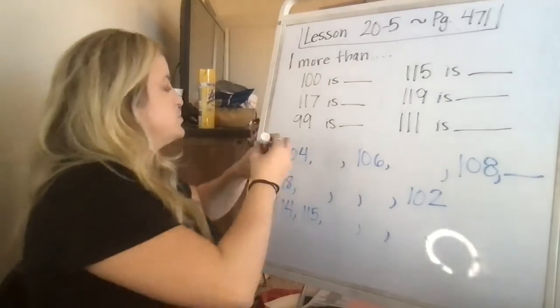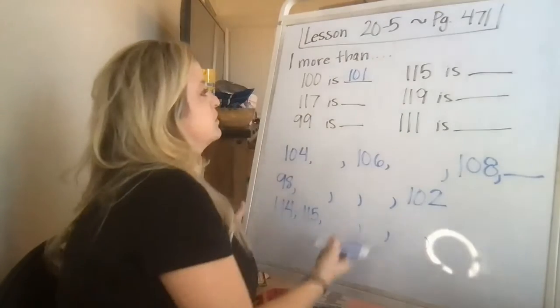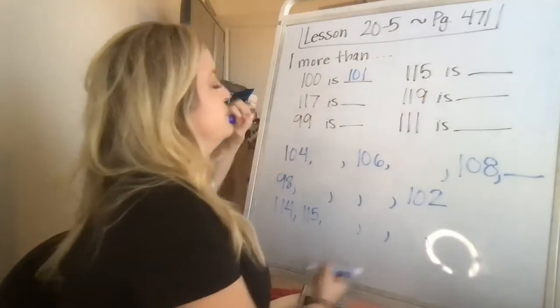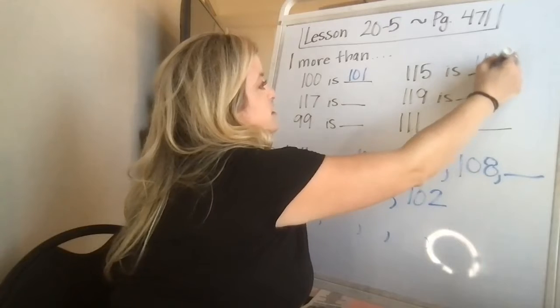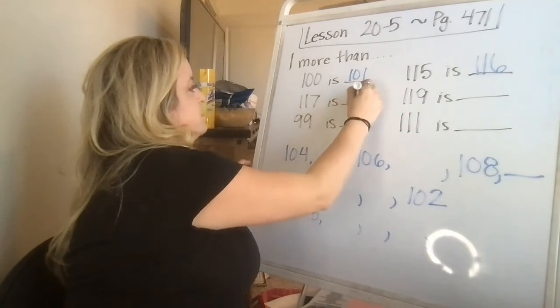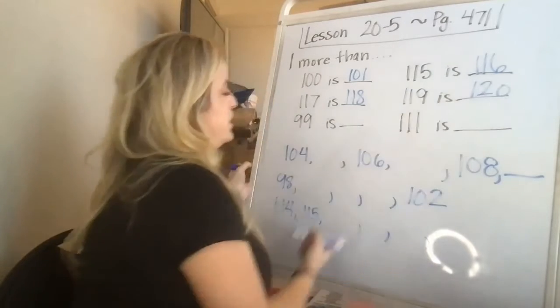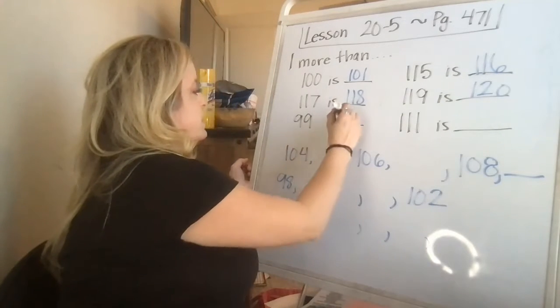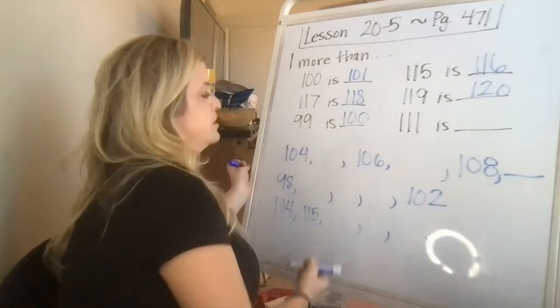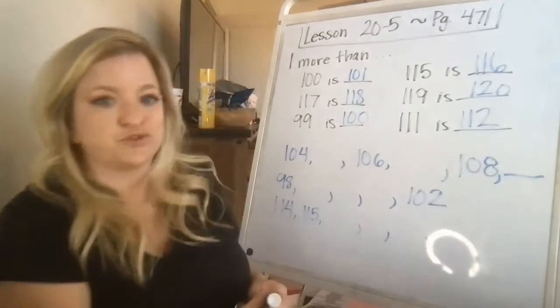So one more than 100 is 101. One more than 115 is 116. One more than 117 is 118. 119, 120. 99, 100. 111, one more than that is 112.